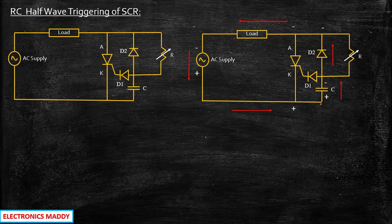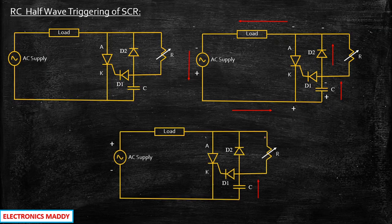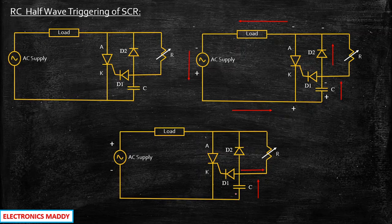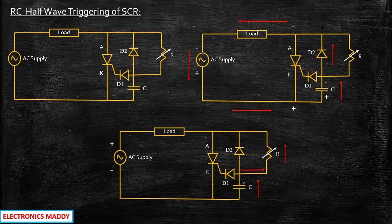The negative half cycle operation is very important because the positive half cycle will be a continuation of it. During the positive half cycle, the polarity of the supply becomes plus and minus. The voltage that was previously stored in the capacitor — which was charged to minus and plus — will first discharge through the resistor R. The capacitor had energy from the previous cycle and during the next half cycle it discharges through the resistive element R.